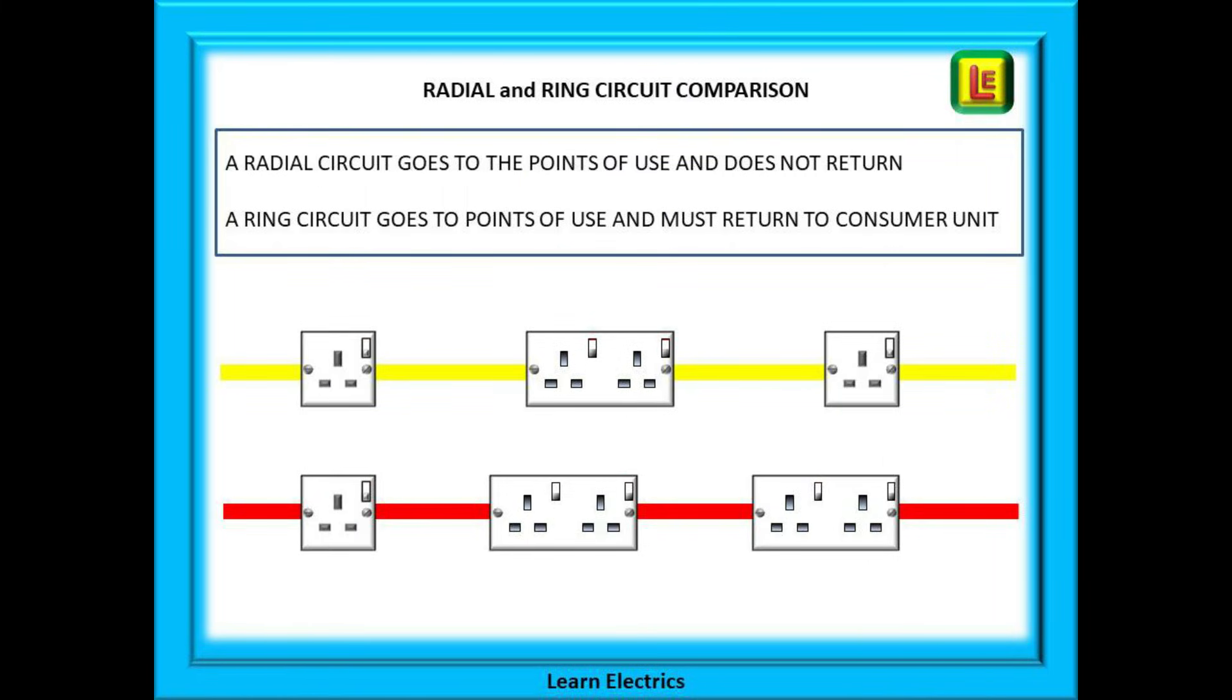A quick recap then. A radial circuit goes to the points of use and does not return. There is only one leg for the current to flow along. A ring circuit, however, goes to the points of use and returns to the consumer unit, so that there are in effect two legs for the current to flow.